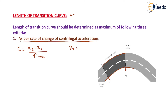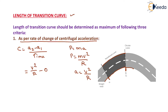We know that P = ma (mass × acceleration) and also P = mv²/R (centrifugal force). Equating these gives a = v²/R. Substituting: at the straight end radius is infinite so centrifugal acceleration a1 = 0, and at the circular end a2 = v²/R. Therefore the rate of change of centrifugal acceleration C = v²/R divided by time T, giving C = v²/(R·T).